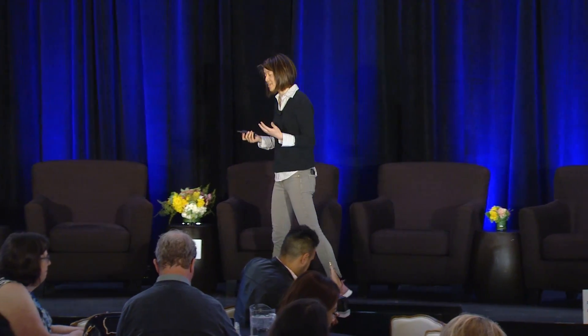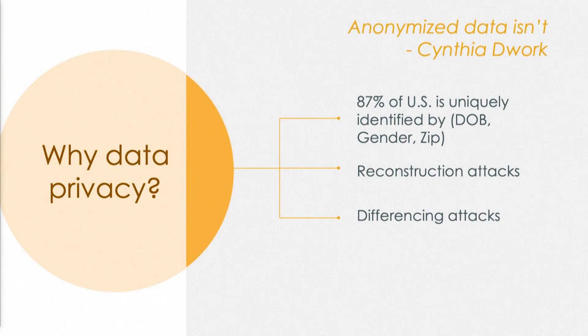Everyone here has probably been trained not to give out sensitive information such as your name, address, or social security number. But did you know that 87% of people in the United States can have their identity reconstructed by hackers based purely on their date of birth, gender, and zip code? That's exactly why traditional techniques such as obfuscation or k-anonymity are no longer sufficient to protect against attacks such as differencing attacks or reconstruction attacks. This is why we are investing into differential privacy.